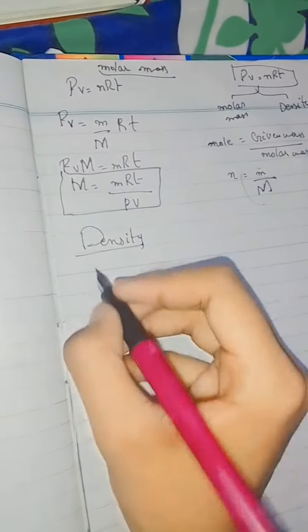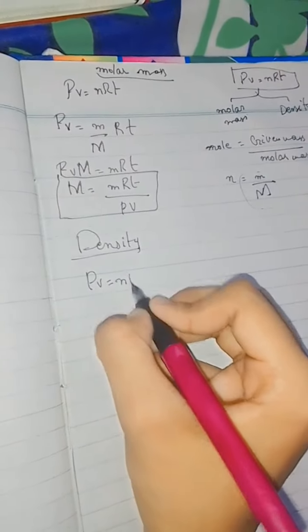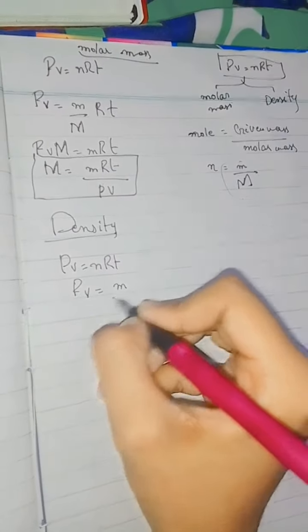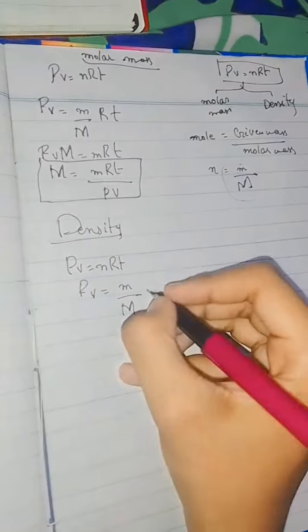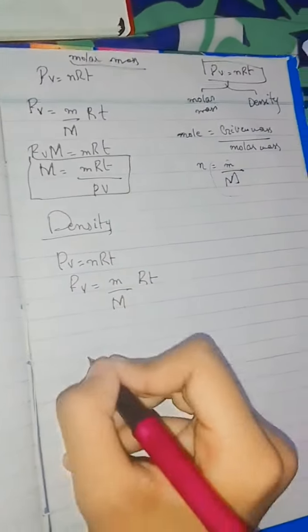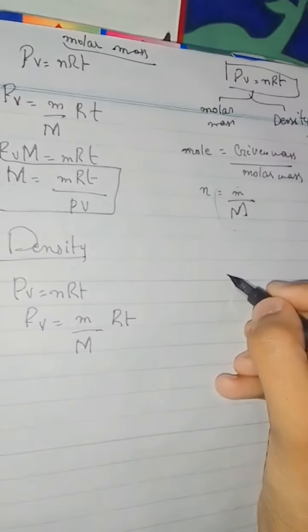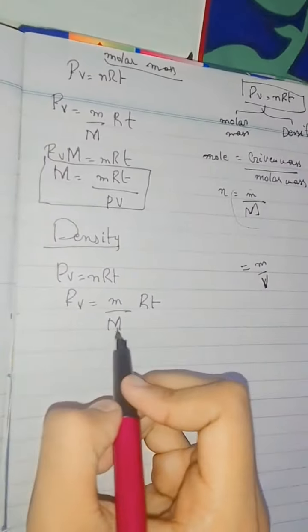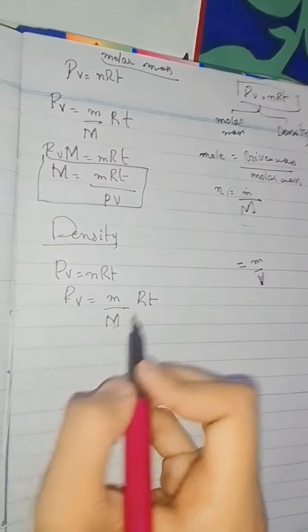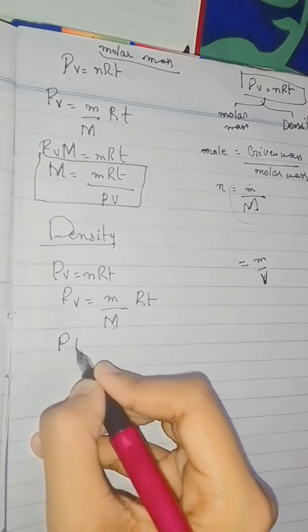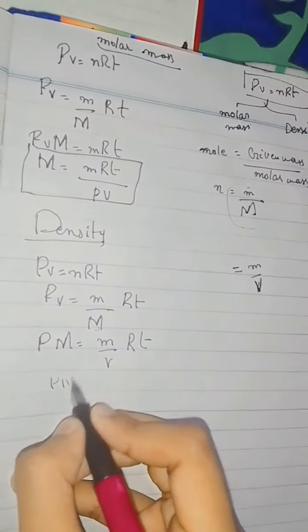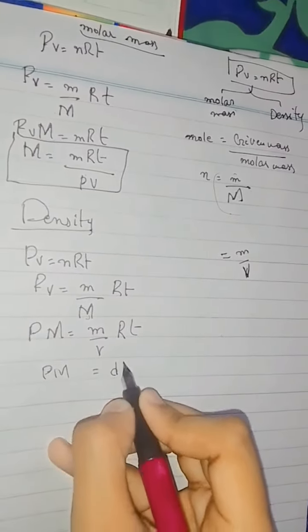Now if you want to find density using the ideal equation, PV = nRT. We substitute n = m/M, so PV = (m/M) RT. The formula of density is m/V. Here molar mass M is dividing, so it will multiply; volume V is multiplying, so it will divide. Cross-multiplying gives PM = (m/V) RT.